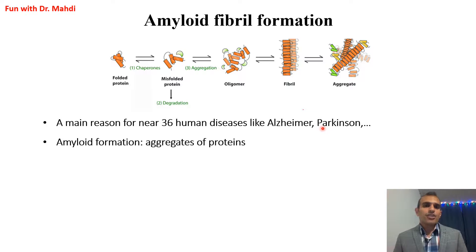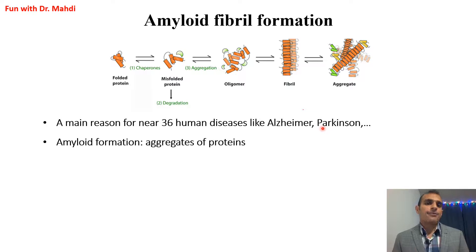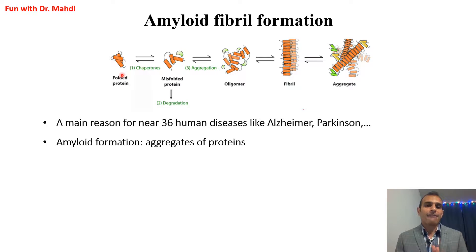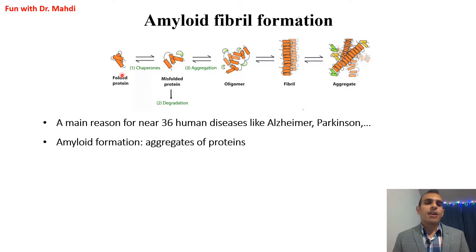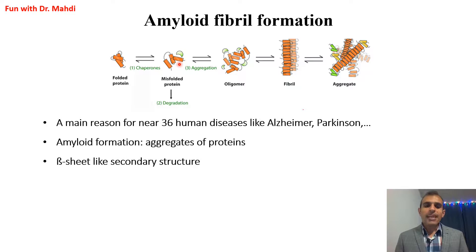Amyloid formation is caused by changes in the structure of proteins and by aggregation of proteins. If you'd like to know more about protein structures, I've already published a video about that. Every protein has four structures: primary, secondary, tertiary, and quaternary. In amyloid formation, a folded protein — one that has already achieved its quaternary structure — turns into a misfolded protein.